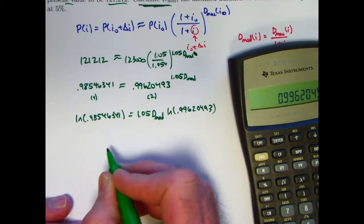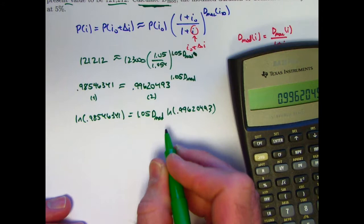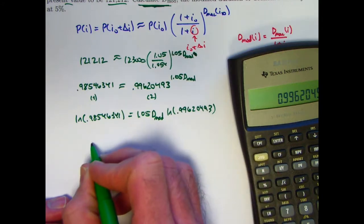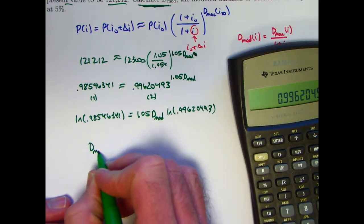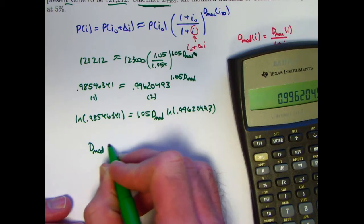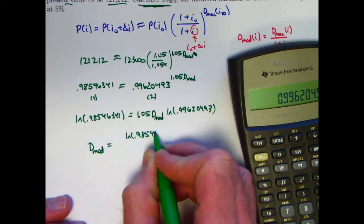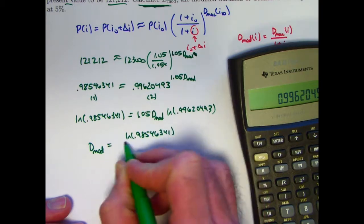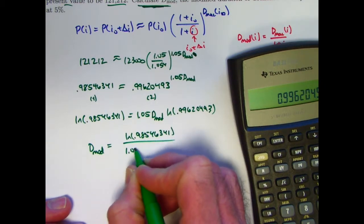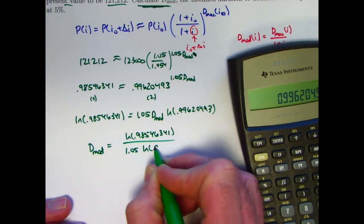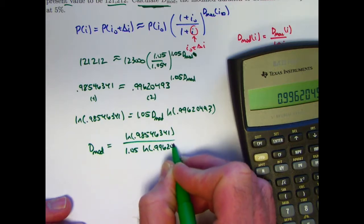So solve for the modified duration by dividing everything by 1.05 and that logarithm right there. The answer symbolically is going to be natural log of 0.98546341 divided by 1.05 times the natural log of 0.99620493.